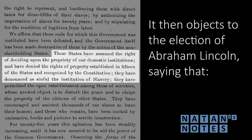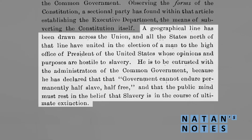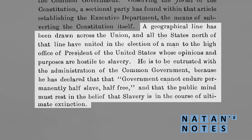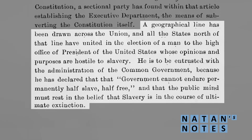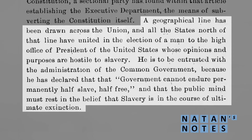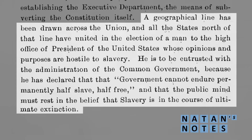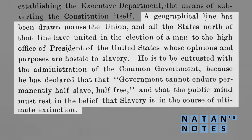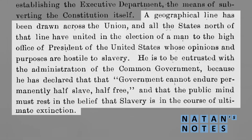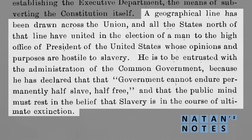It then objects to the election of Abraham Lincoln, saying that quote, "a geographical line has been drawn across the Union, and all the states north of that line have united in the election of a man to the high office of President of the United States whose opinions and purposes are hostile to slavery. He is to be entrusted with the administration of the common government because he has declared that that government cannot endure permanently half slave, half free, and that the public mind must rest in the belief that slavery is in the course of ultimate extinction."